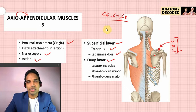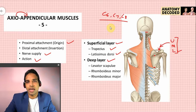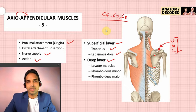The actions of latissimus dorsi are remembered by the swimming action: adduction, medial rotation, and extension at the shoulder joint.